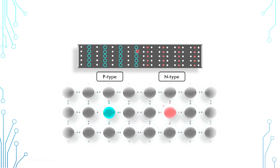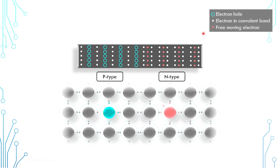To make the discussion easier, from now onwards, I'll be referring to the free-moving electrons as red electrons and those electrons bounded by covalent bonds as white electrons.